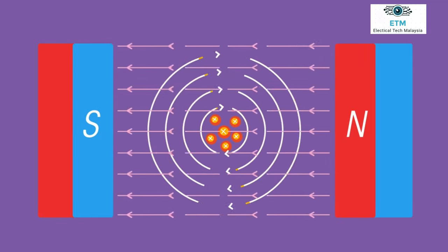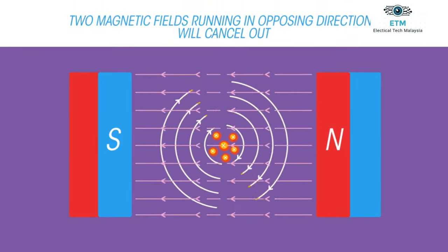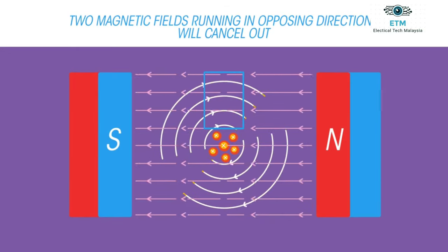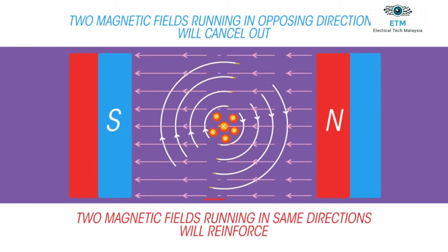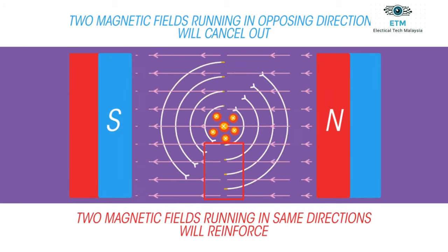These magnetic fields interact. Above the wire, these two fields run in opposite directions and so cancel each other out. Below the wire, the fields run in the same direction and reinforce each other.